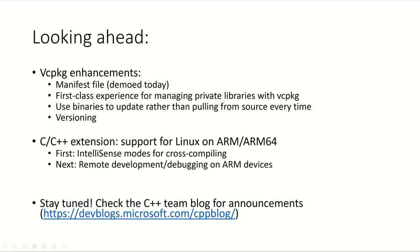As we wrap up, I want to talk about what's coming next for vcpkg and the C++ extension in VS Code. There are a few enhancements currently in the works for vcpkg: first is support for a manifest file — the vcpkg.json that I demoed today. We're also working on a first-class experience for managing private libraries with vcpkg, and customers will be able to bring in additional libraries outside what's supported in the catalog. vcpkg will use binaries to update rather than pulling from source every time. We'll also support versioning, so you can specify exactly which version of a package you'd like to use.